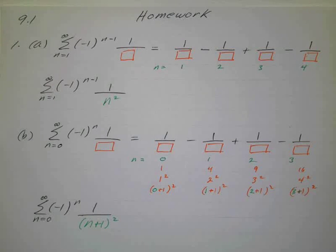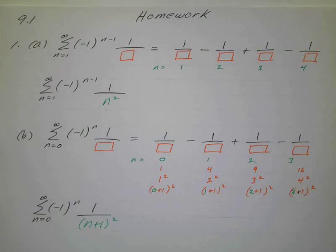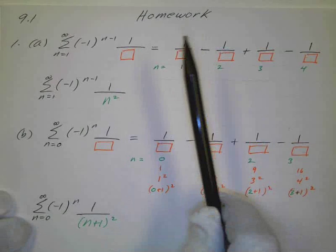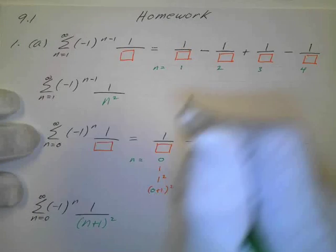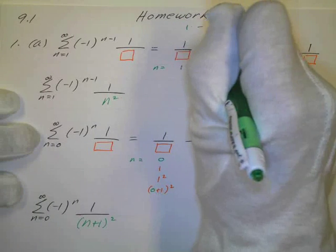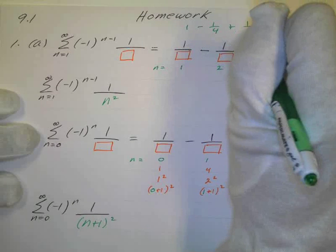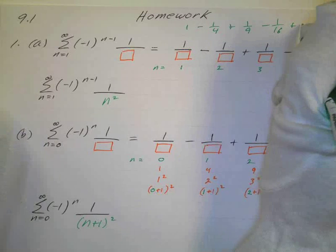Okay, these are some problems from section 9.1, and the first ones are these little series that you have to figure out some missing components. The first one is replace the star with the expression that will generate the series, so this is my series. I didn't write it down, but it was 1 minus 1 over 4, plus 1 over 9, minus 1 over 16, I guess that was the series.